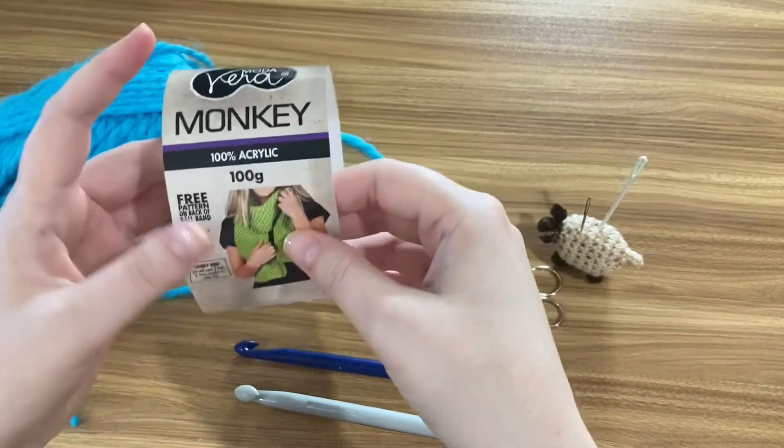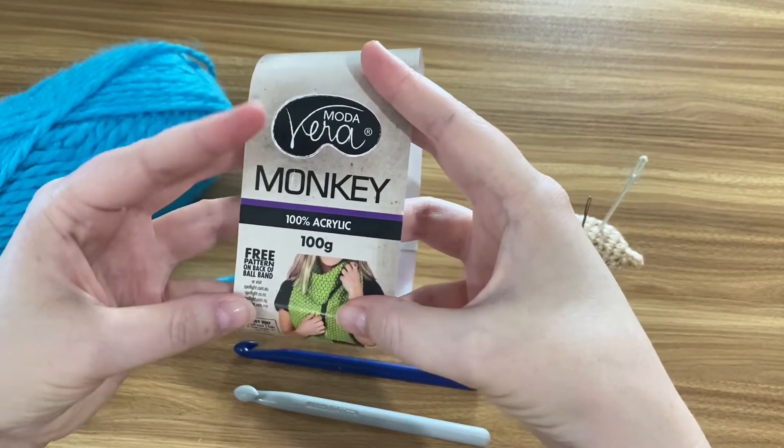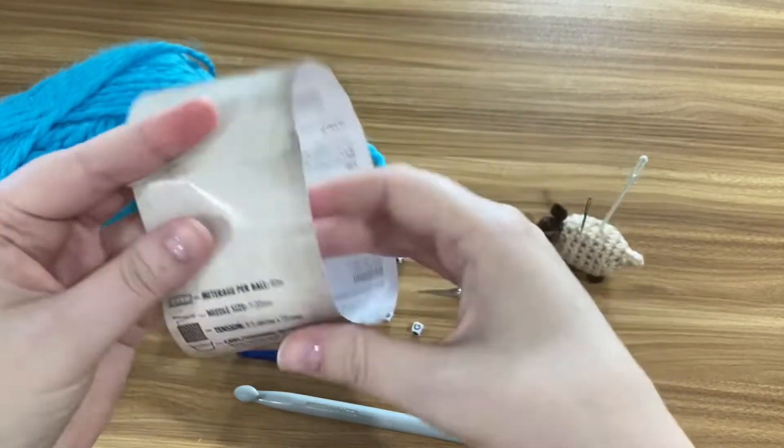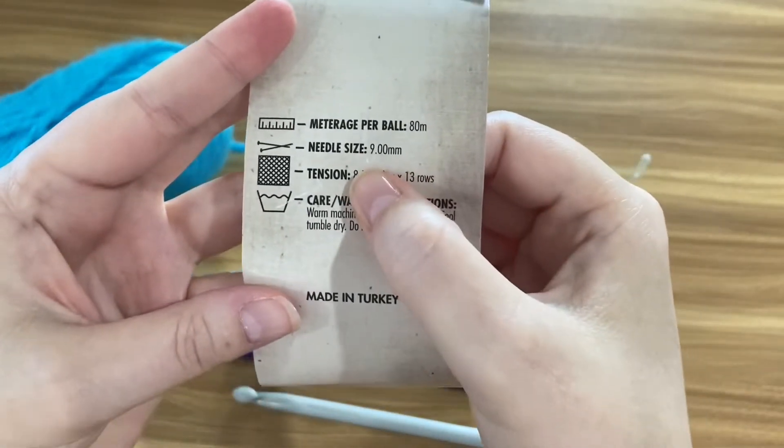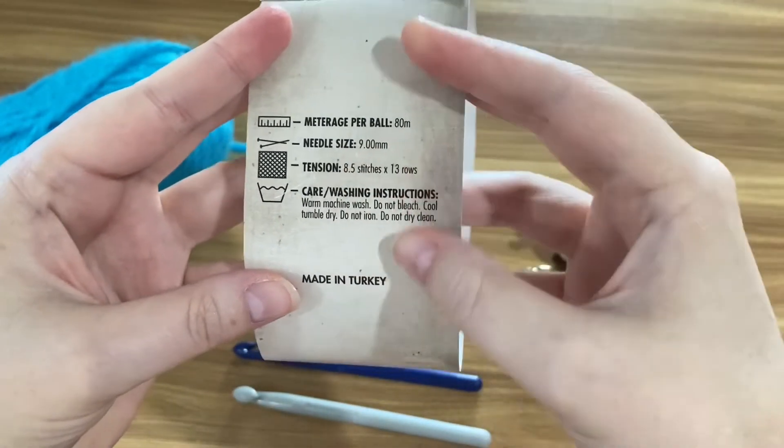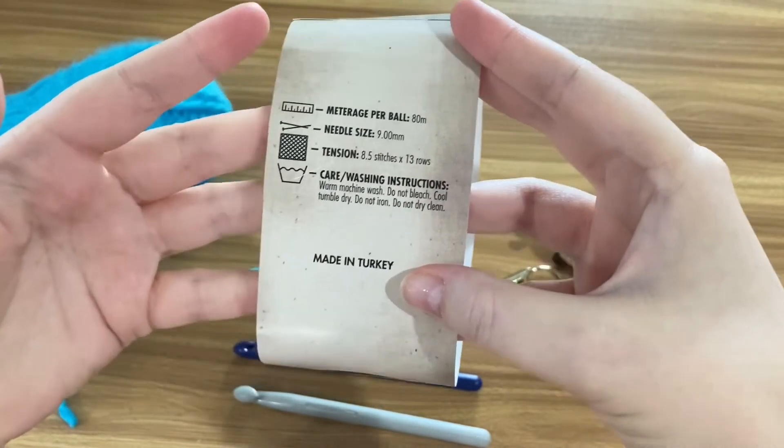To find the hook that's recommended for your yarn, have a look at the paper label wrapped around the yarn. I'm using Modeveya Monkey Yarn and if you have a look at the yarn label, you'll see here that it says to use 9mm needles for knitting. For making these friendship bands, you can translate that to the same size hook for crocheting.